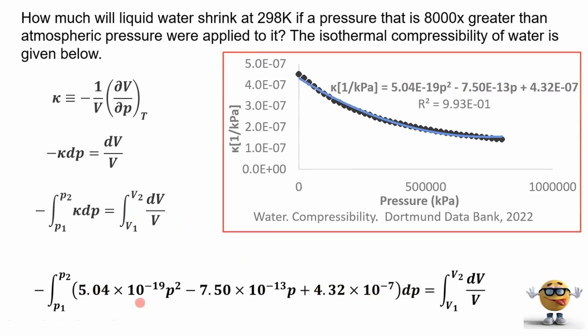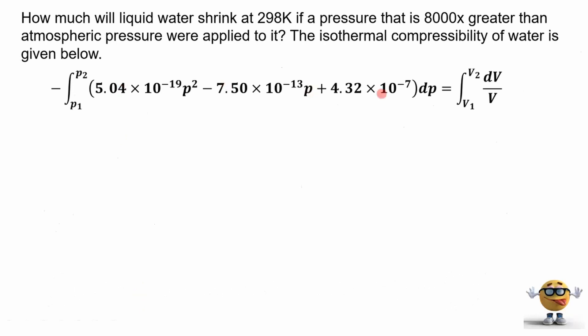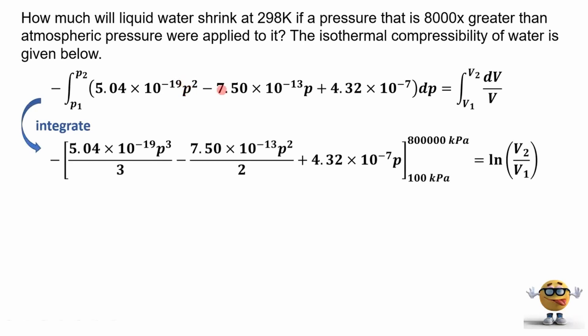Now I'm going to give ourselves some more room and move this equation up top. And to do this integral, it's not too bad. Even though it's very long, each term is just a polynomial. So we're going to do the reverse power rule on each of these terms here, and we're going to go from 100 kilopascals, because we're assuming that we want to go 8,000 times greater than atmospheric pressure. So if atmospheric pressure is 1 atm, 1 atm is approximately 100 kilopascals.